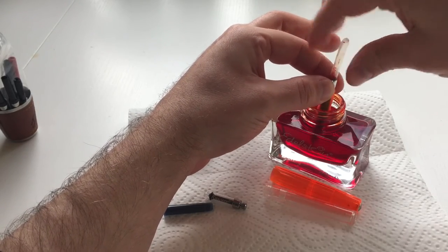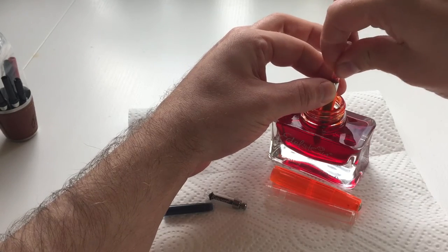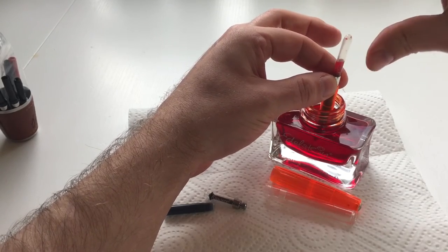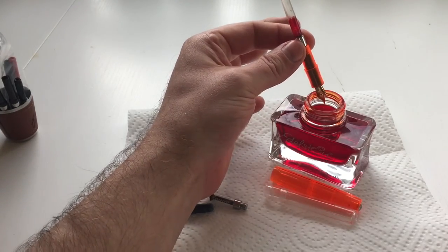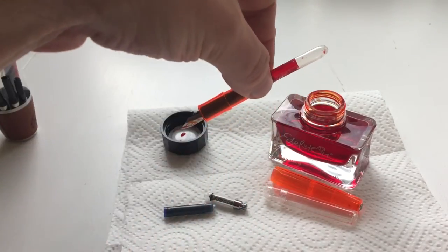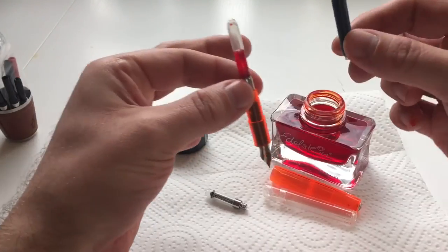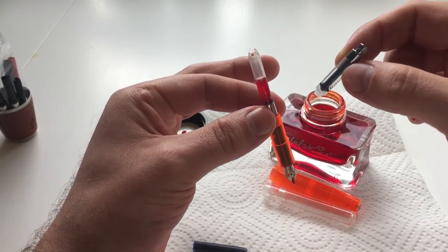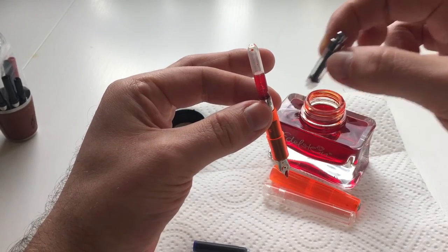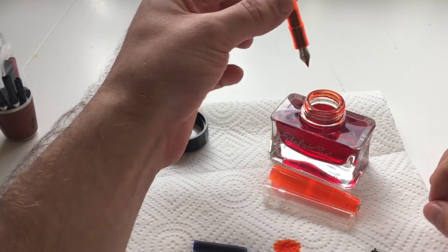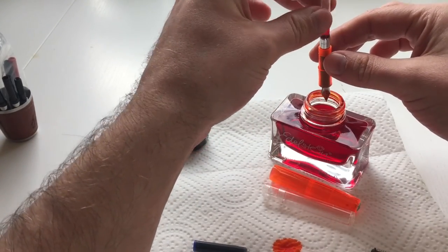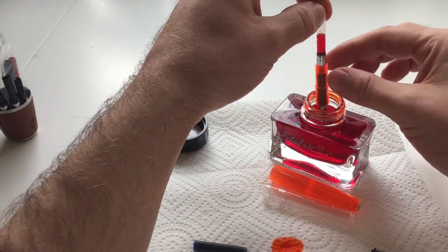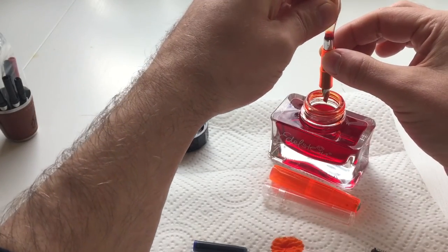This is probably why many people in the fountain pen community sort of hated this squeeze converter a little bit. Depending on the pressure that you apply onto the squeeze converter, it feels like halfway or three quarters, probably two thirds. As you see, you'll get ink into it, and the amount that you would really get into the squeeze push piston should probably be similar.